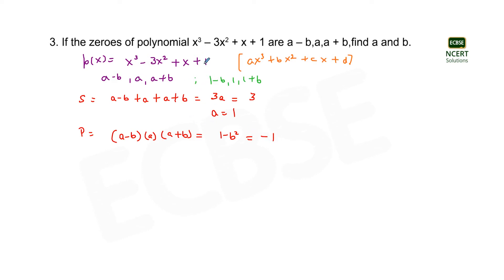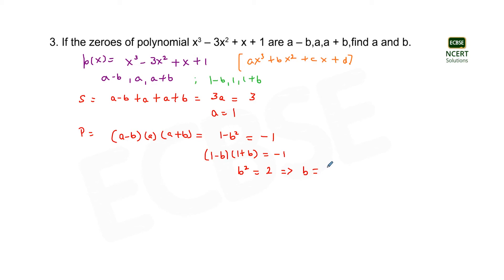Applying the identity, (1 - b) × 1 × (1 + b) = -d/a = -1. Using the identity (1 - b)(1 + b) = 1 - b², we get 1 - b² = -1, so b² = 2, from which b comes out to be equal to plus or minus root 2.